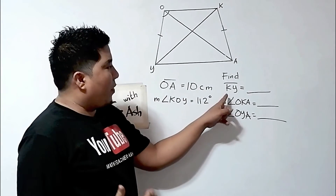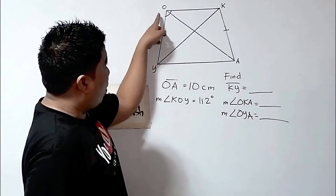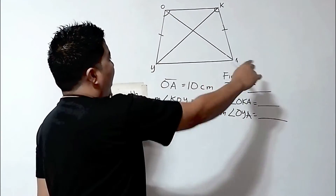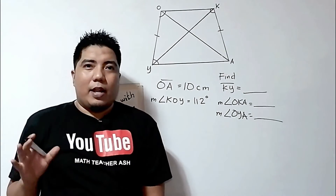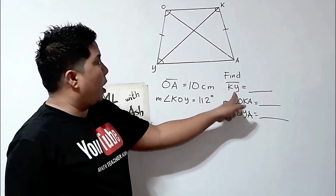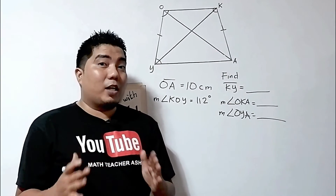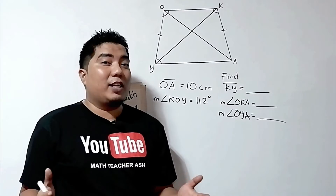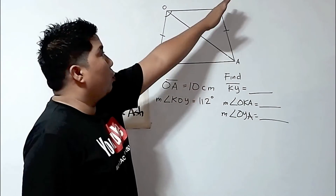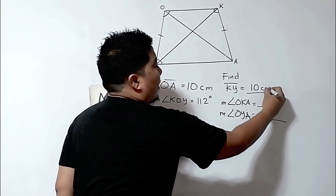The question is: how do we find the value of line segment KY, the measurement of angle OKA, and angle OYA? Now, OA here is the diagonal, and KY is also another diagonal. Since this is an isosceles trapezoid, one of the properties states that diagonals are also congruent. So basically, the measurement of KY is also the same as OA. Therefore, line segment KY is also 10 centimeters. Easy, right?